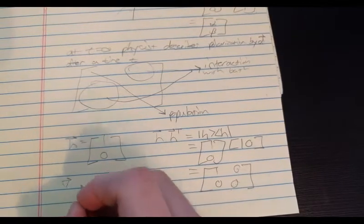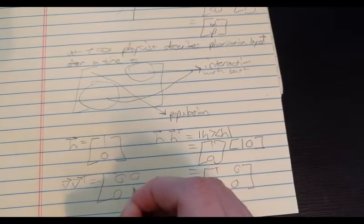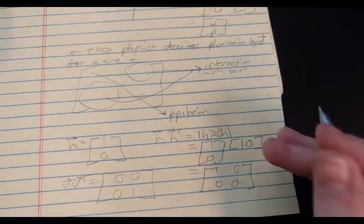And similarly, if you do the same case with V, you get 0, 0, 0, 1. And this is also pure state for the same reason.